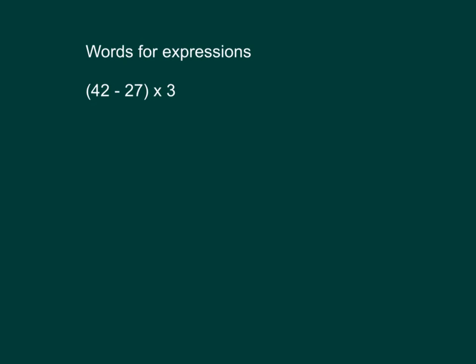We can also come up with words for expressions. So here we have the difference of. So we can come up with words: 3 times the difference of 42 and 27. So we have 3 times that amount. We could have figured out that value as well.